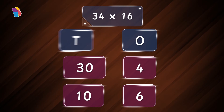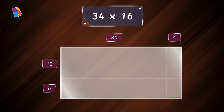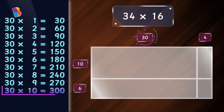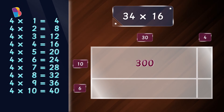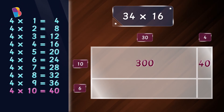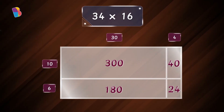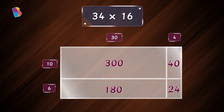Right! Let me move on to multiplication now. I have to multiply the length and width of each rectangle to find the area. So, I need to find thirty times ten, four times ten, thirty times six, and four times six. The area of the first rectangle will be thirty times ten, which is three hundred.